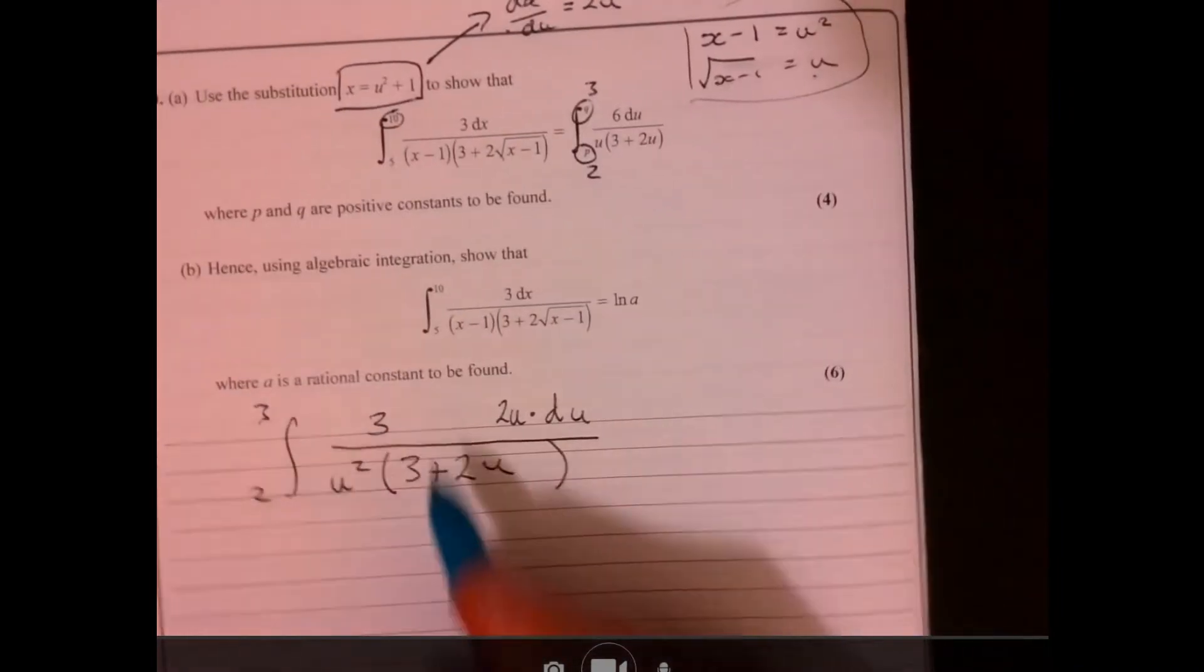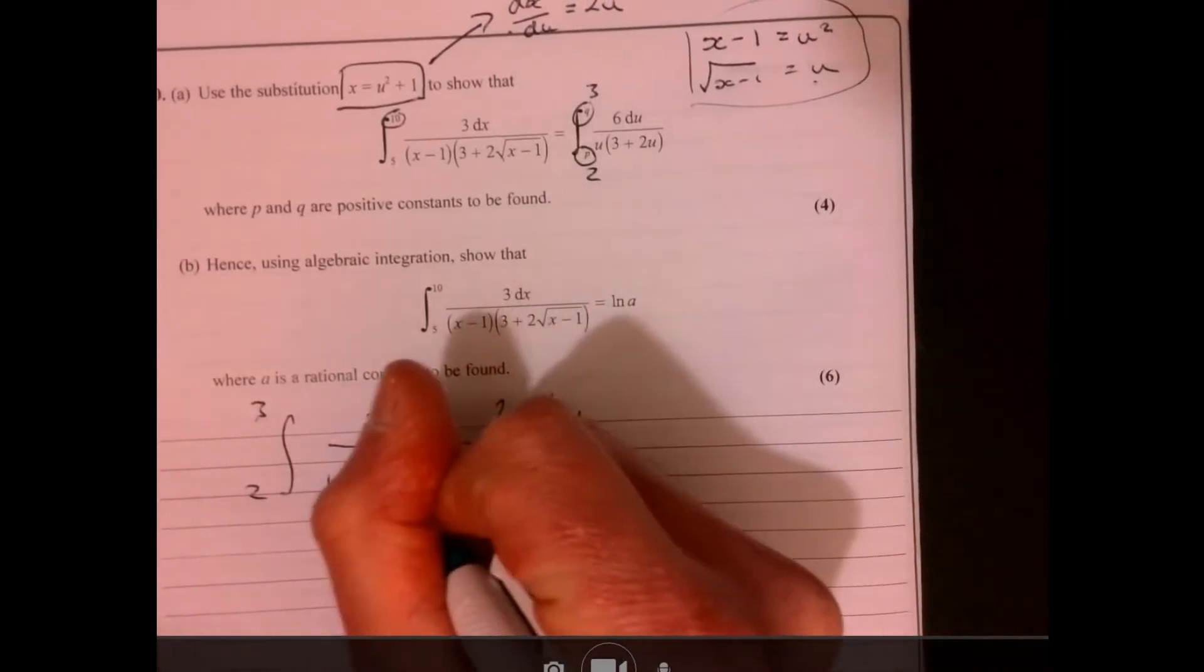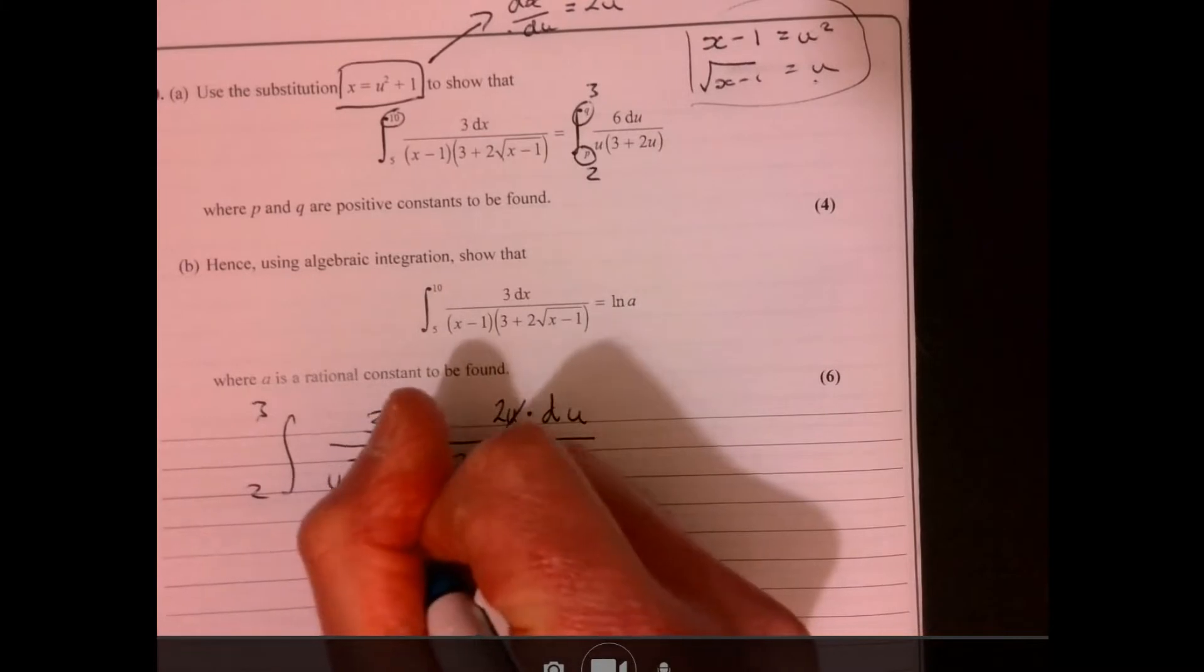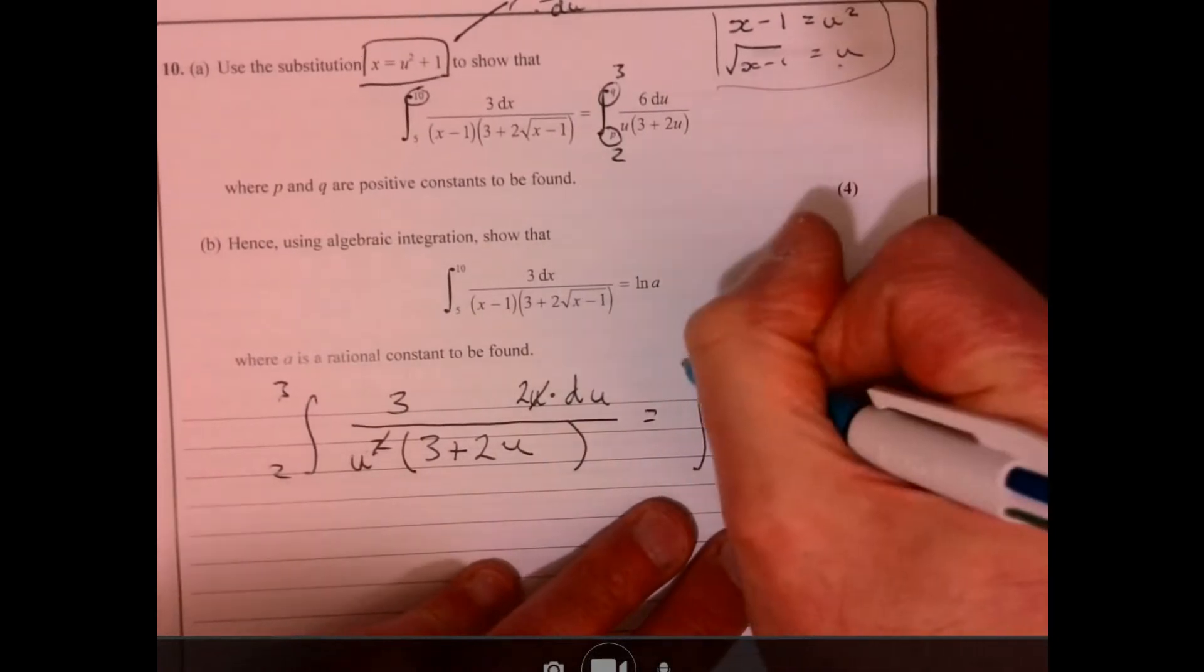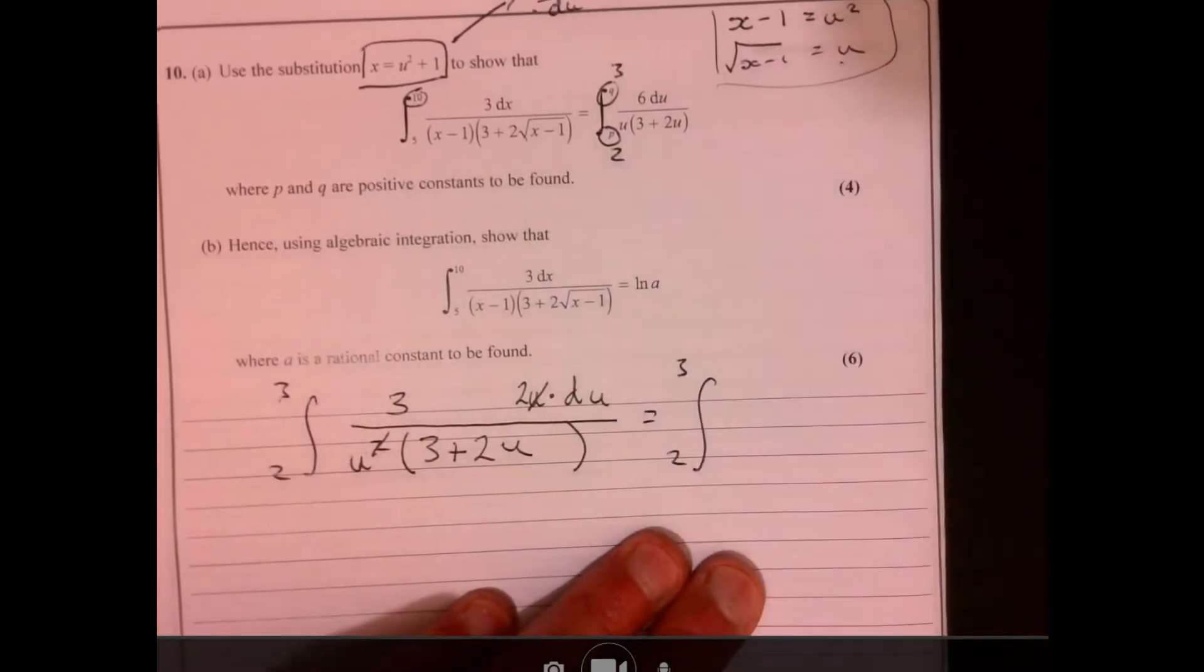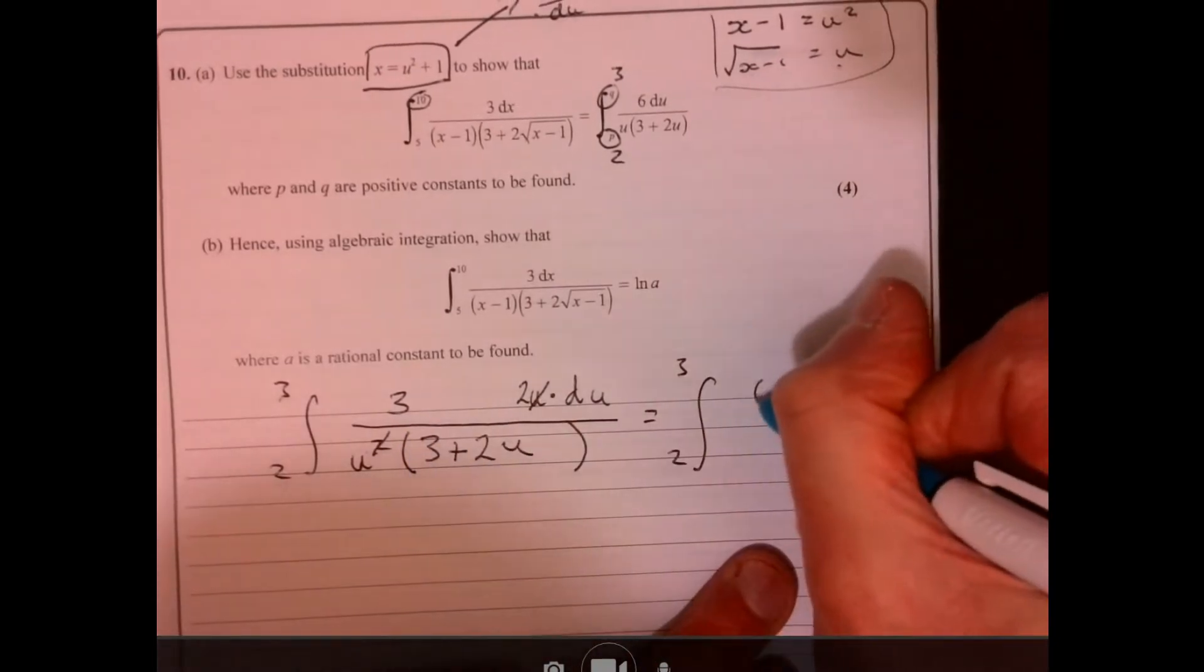Now let's just tidy this up. So we've got a u on the top. So it's all multiplied. So therefore, we can do a little bit of cancelling down. And then let's see where we get to now. So we've got 3 and 2.